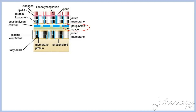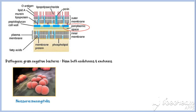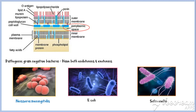In contrast to gram-positive bacteria, gram-negative bacteria have both exotoxins and endotoxins. Common examples of gram-negative bacteria are Neisseria meningitidis, which causes meningitis; E. coli, a commensal in the gastrointestinal tract; and Salmonella, which causes typhoid fever.